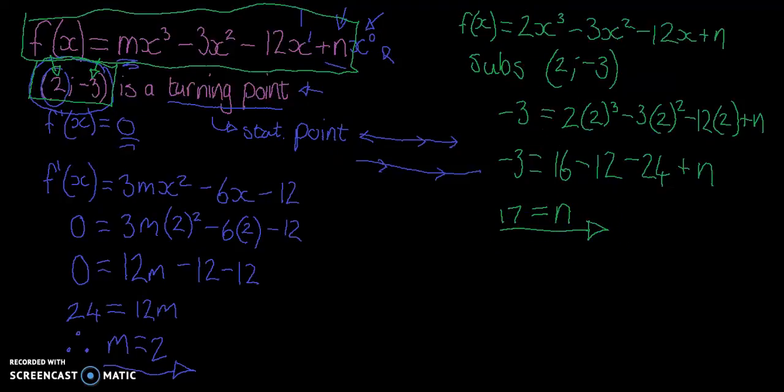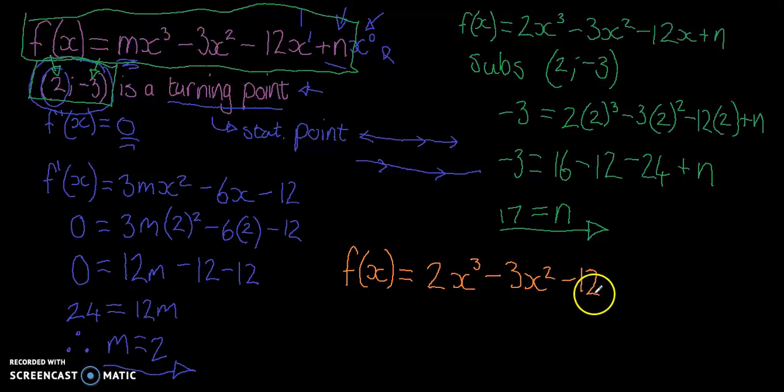Now you may in the last line want to rewrite your final formula: f(x) = 2x³ - 3x² - 12x + 17.